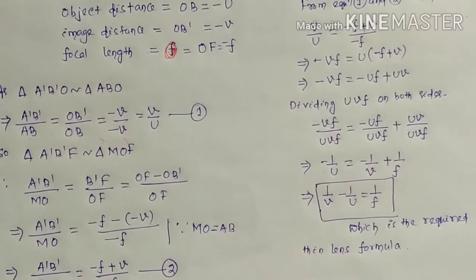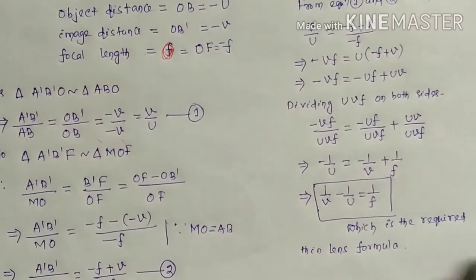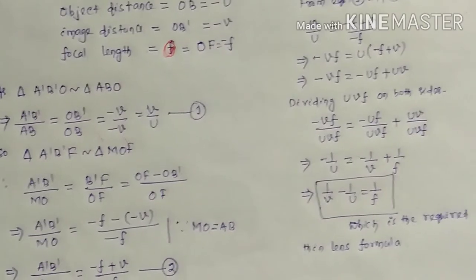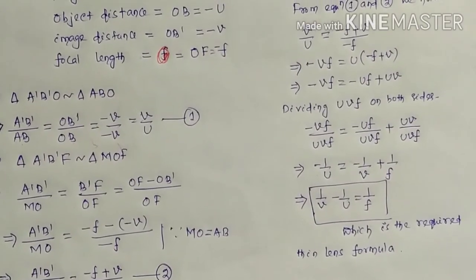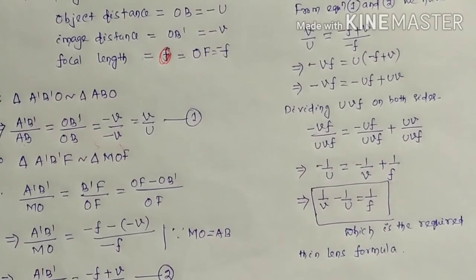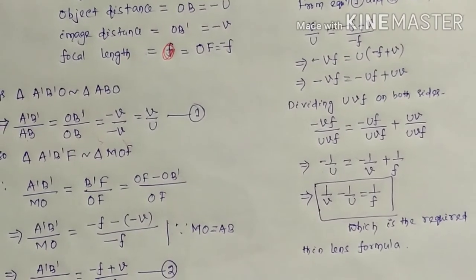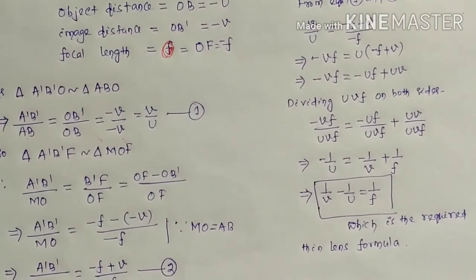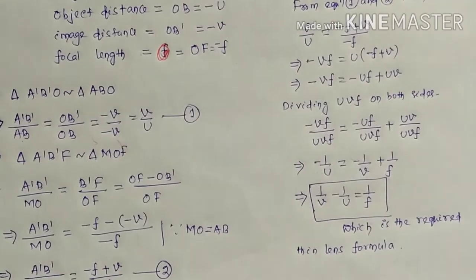This is 1/v − 1/u = 1/f, which is the required thin lens formula. We have now discussed the derivation of the thin lens formula for both convex and concave lenses.